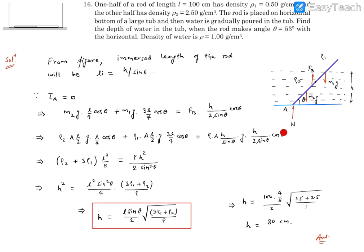Here I have written the buoyancy expression. Buoyancy is going to be the density of liquid water, which is ρ, into the submerged volume. Submerged volume is going to be A into the submerged length which is h upon sin θ into g. So that's the buoyancy.